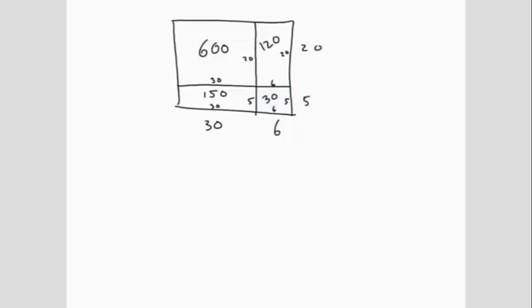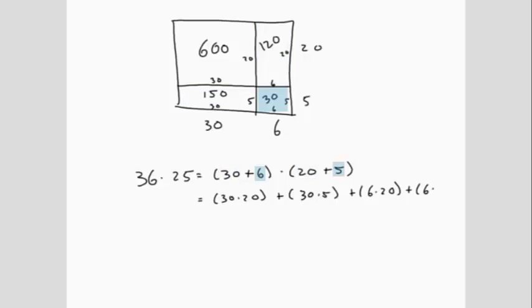The total number of boxes in the entire picture is the sum of the number of boxes in each part. We will now write out what this calculation looks like symbolically. 36 times 25 is equal to 30 plus 6 times 20 plus 5. This is equal to 30 times 20 plus 30 times 5 plus 6 times 20 plus 6 times 5.